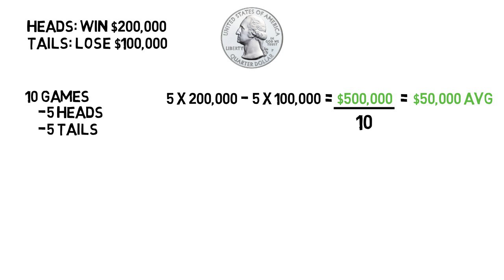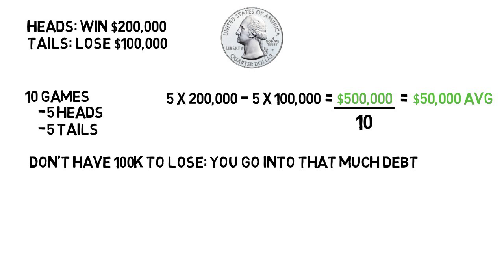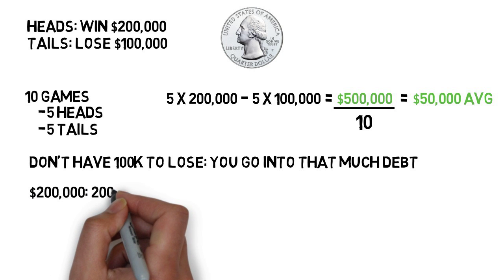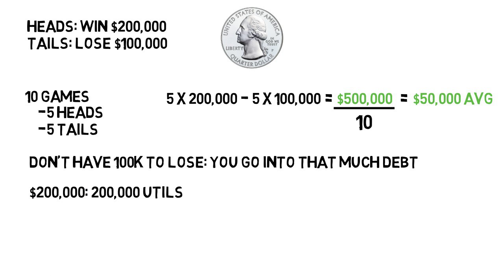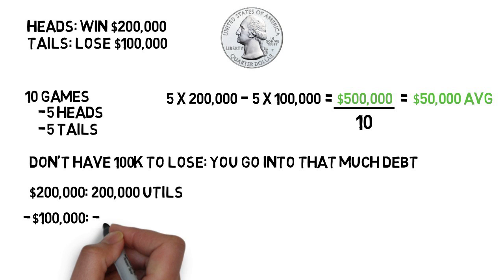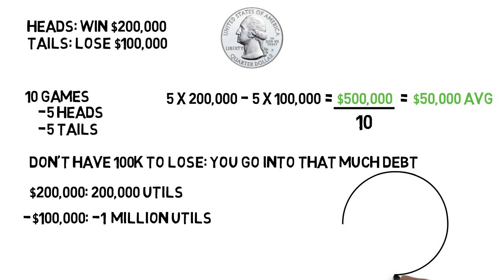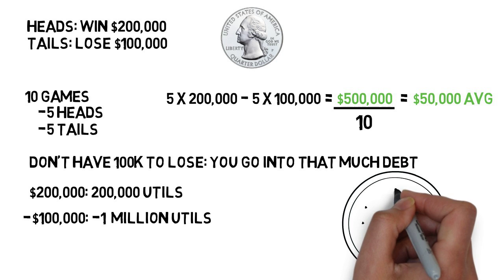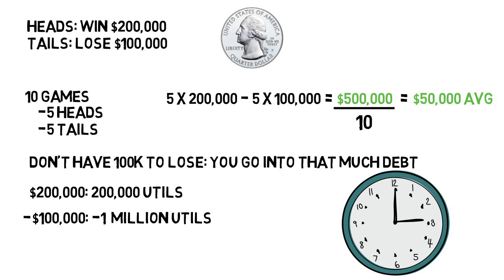But be honest — if you were really given this opportunity right now, would you play it? And if you don't have $100k to lose, you'd go that much into debt. You probably would not play this game, because you might view $200,000 as 200,000 utils, but losing $100,000 is like minus 1 million utils — the years of payments and stress of that is probably much more of a burden. So sometimes our emotions and view of the world cloud our vision of what the numbers are telling us, but that's because we aren't robots, and sometimes it is the logical thing to do.